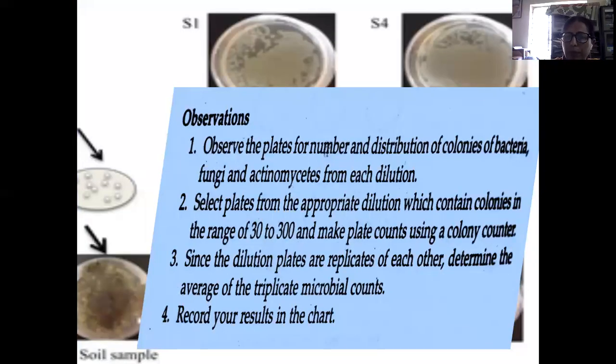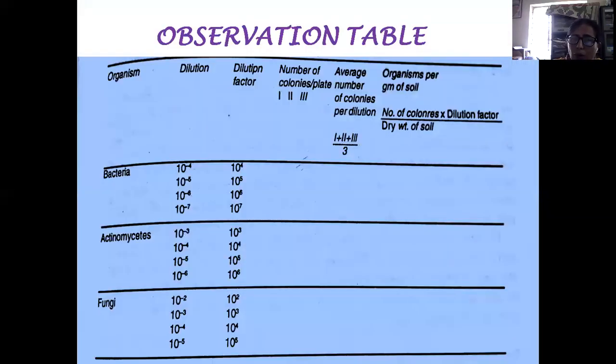The observations are taken after 48 hours. The plates are observed for number and distribution of colonies of bacteria, fungi or actinomycetes from each dilution. Those plates are taken which range from 30 to 300 number of colonies. Since the dilution plates are replicates of each other, determine the average of triplicate microbial counts and record the result.